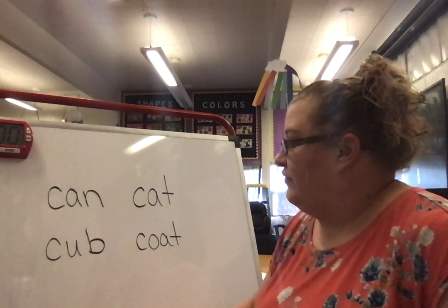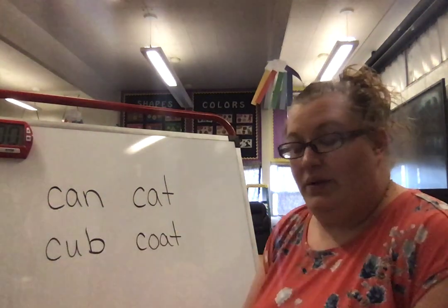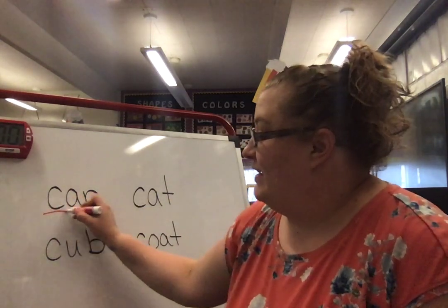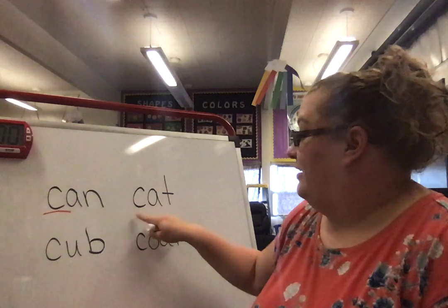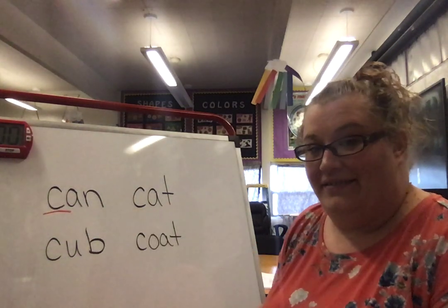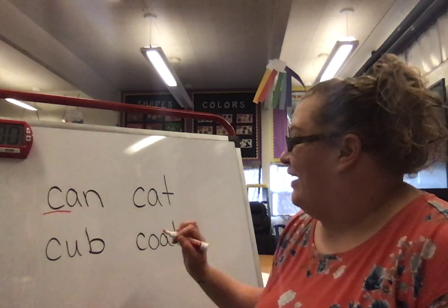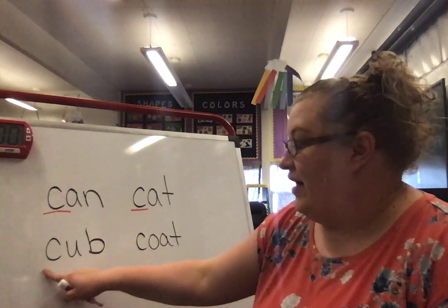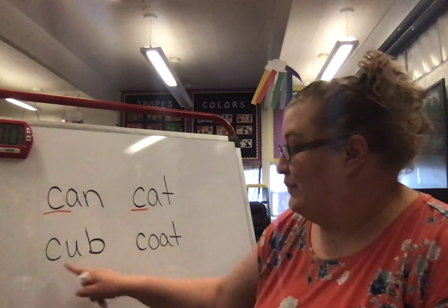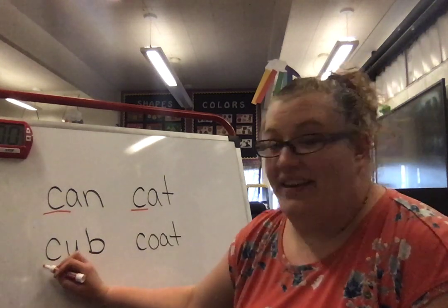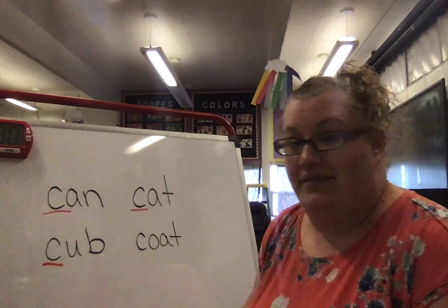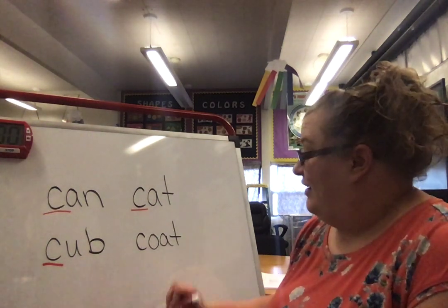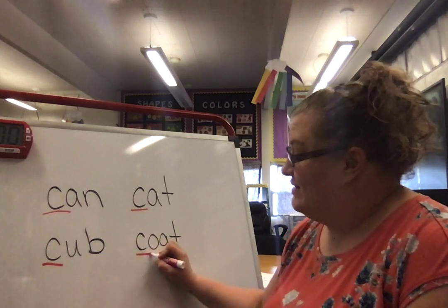I have some words back here on the board. Our first word right here is 'can.' What's the first sound? K. Here we have 'cat,' and that first sound in cat is K. Here we have 'cub.' The first sound in cub is K. And then we have 'coat.' The first sound in coat is K.